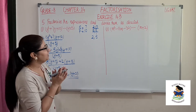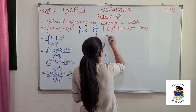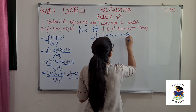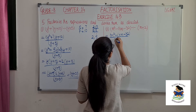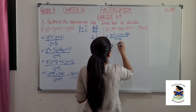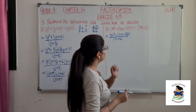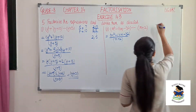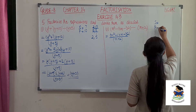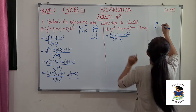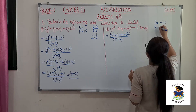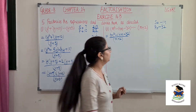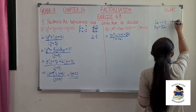Now the second one: m squared minus 14m minus 32 over m plus 2. Again this will be done by splitting the middle term. The sum should be minus 14 and the product is minus 32.